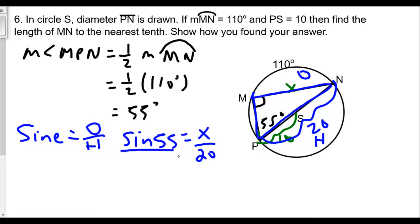And of course, sine 55 over 1, we're going to cross multiply. You'll get x times 1 is equal to 20 times the sine of 55 degrees. Now we pull out our calculator.